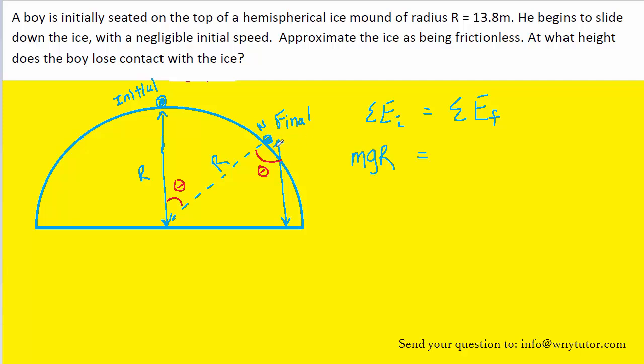For the final energy, the boy is moving certainly because he slid down the side, so there will be kinetic energy at the final point, and there will also be some gravitational potential energy because the boy has not yet returned to ground level. He still has a height. But it's that height that we will need to determine. Notice that it is no longer the full radius of the circle because the boy has descended from his initial height.